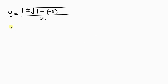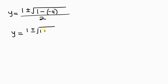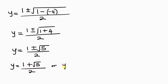Simplifying further, y equals 1 plus or minus the square root of 1 — negative times negative is positive — so plus 4, all over 2. That gives y equals 1 plus or minus the square root of 5, all over 2. We have a golden ratio. So y equals 1 plus the square root of 5 all over 2, or y equals 1 minus the square root of 5 all over 2.